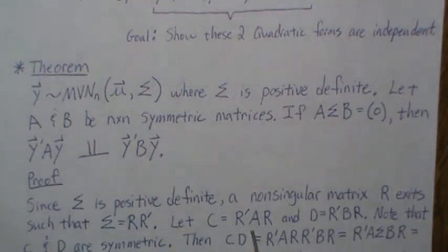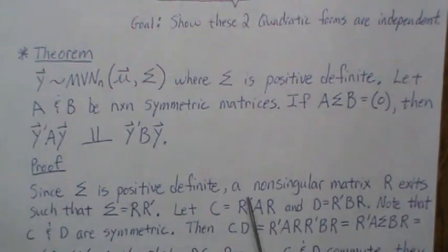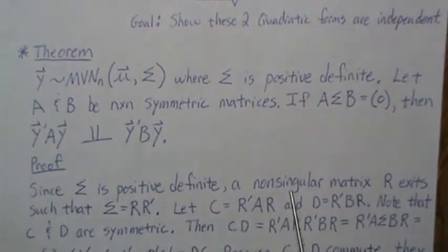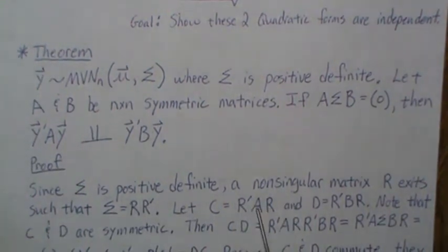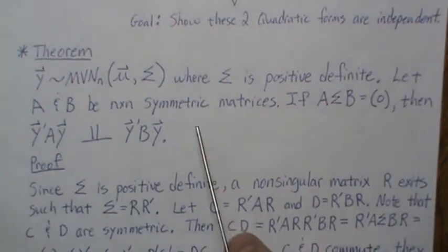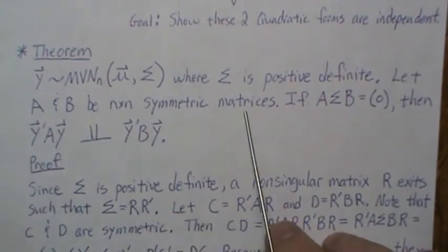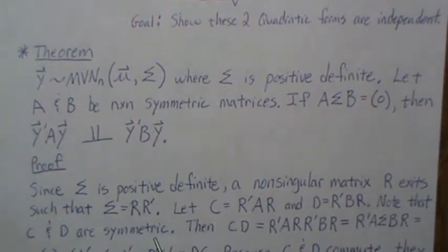We're going to let C equal this matrix, R transpose A R. We're going to let D equal R transpose B R. Now note that C and D are symmetric. So if we take the transpose of this, then that R gets shifted to the front, and then it's A transpose, and then R. But we're assuming that A and B are symmetric. So that's why matrices C and D are symmetric.